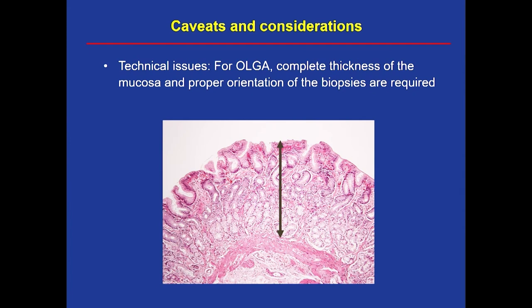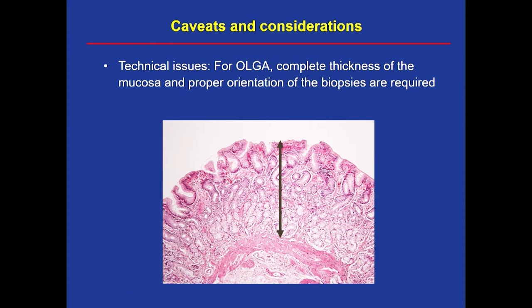Another caveat for the OLGA system is that complete thickness of the mucosa is needed and the tissue has to be well-oriented. Histotechnologists need to be trained to achieve complete mucosal thickness, because otherwise you cannot assess the loss of glands. For OLGIM, even if the biopsy is small or poorly oriented, intestinal metaplasia — if it's there — is easier to diagnose.